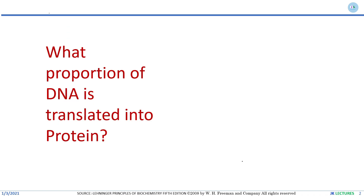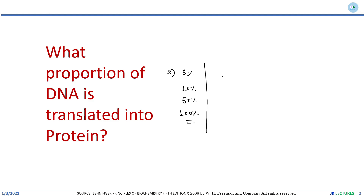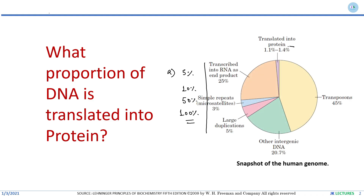Moving to the very first question: what proportion of DNA is translated into protein? Your options are around 5%, 10%, 50%, or 100%. Please comment your answer and pause the slide to think about it. Continuing with the answer — it is quite less than expected.